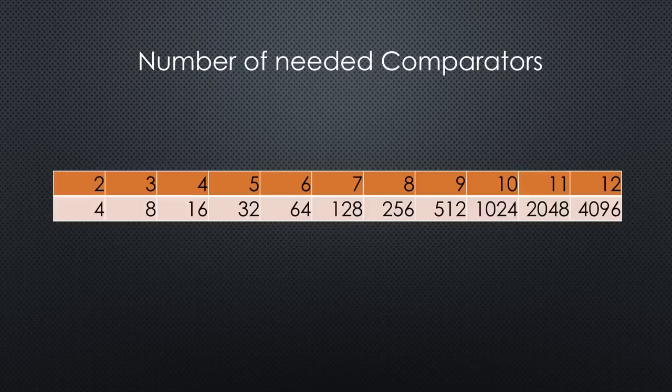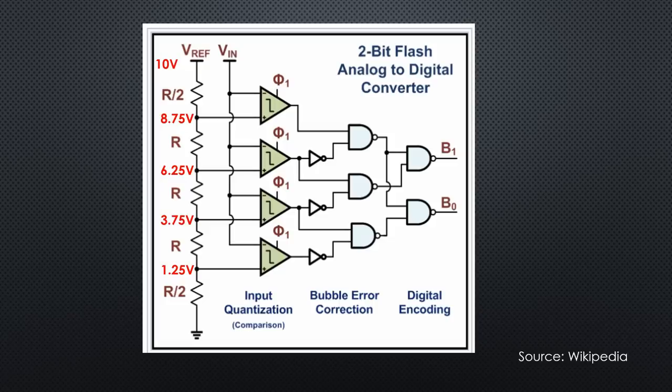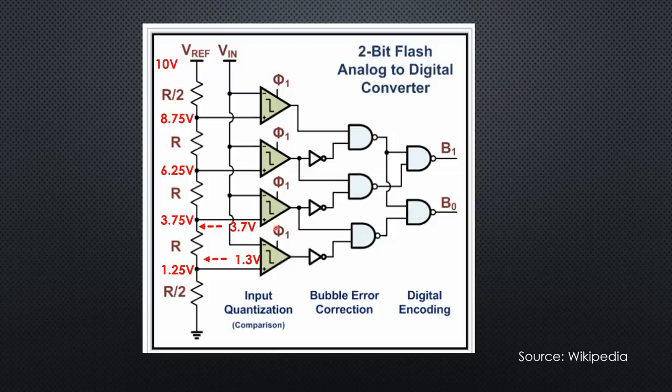And here, we can discuss another important topic: resolution and accuracy. If we have a voltage of 1.3 volts, we get a 1. If we apply 3.7 volts, we also get a 1.